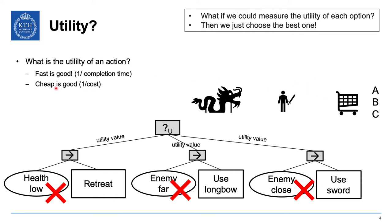In another situation, 'cheap is good' — you want to buy what you need at the lowest cost. Maybe store C is really cheap but you have to drive further to get there, so that's the best utility if you're low on cash. Or 'success is good' — utility is the success probability of shopping. If you want very rare Brazilian tomatoes, you'd go to the store with the highest chance of finding them, or where opening hours make success more likely.